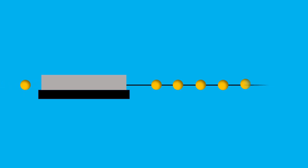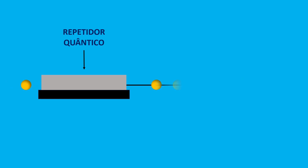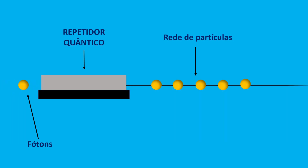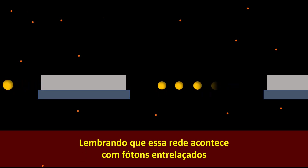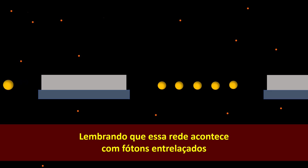A solução é o que os pesquisadores chamam de repetidor quântico. Ao contrário do clássico, que repete um sinal através de uma rede existente, o quântico cria uma nova rede de partículas entrelaçadas para retransmitir a mensagem. A cada estágio desta rede quântica, um repetidor deve ser capaz de capturar e processar bits de informação quântica para corrigir erros, armazenando-os por tempo suficiente para que o resto da rede fique pronto. Aqui entram dois grandes problemas: fótons são super difíceis de capturar, e a informação quântica é muito frágil e complicada de armazenar.